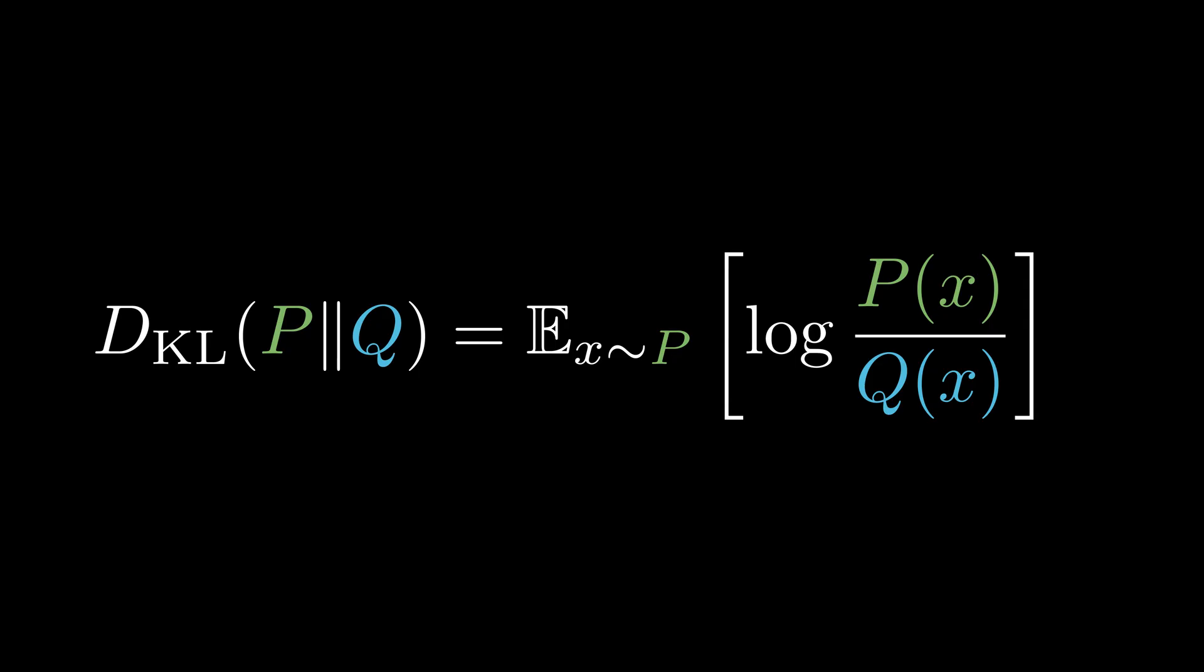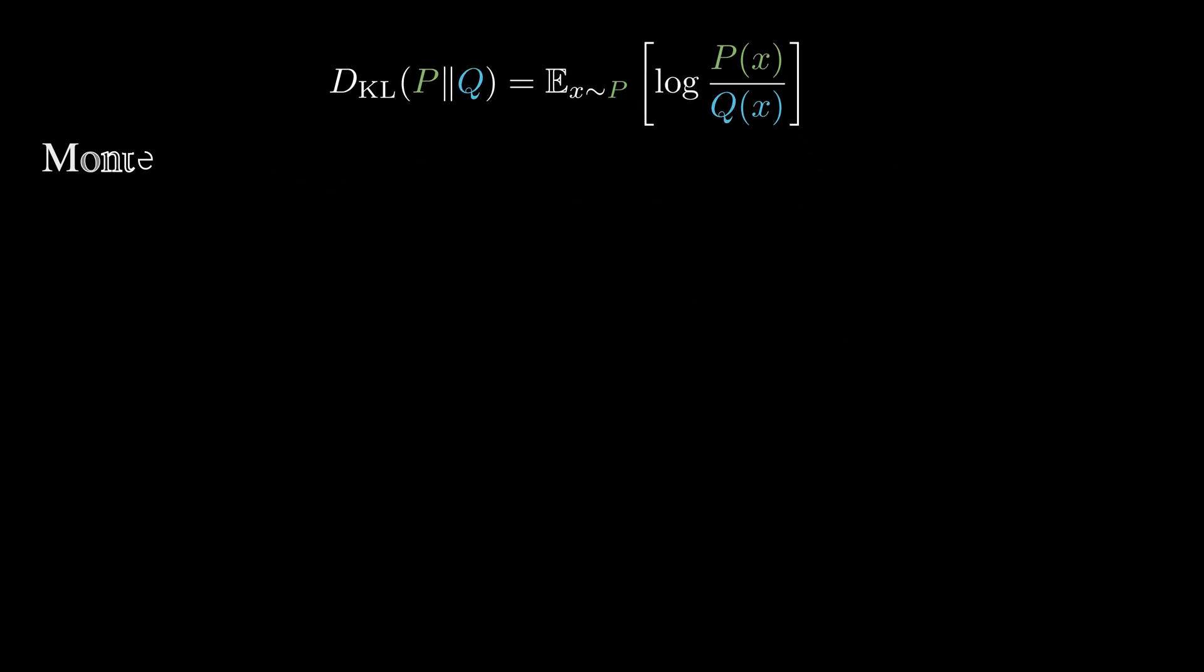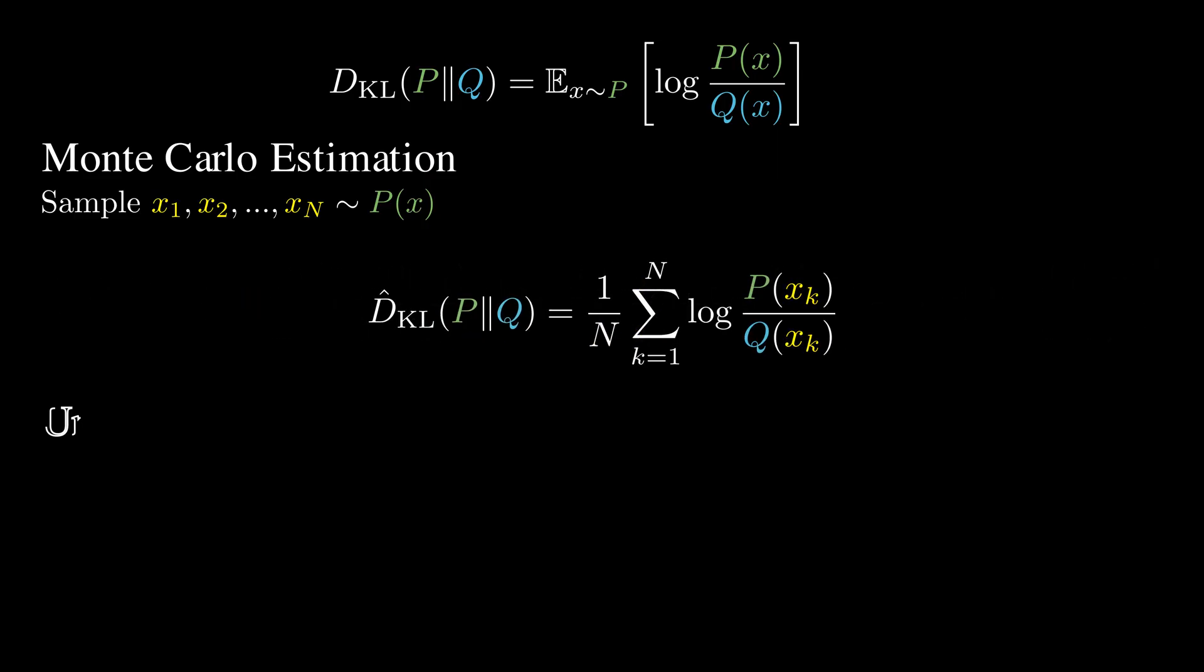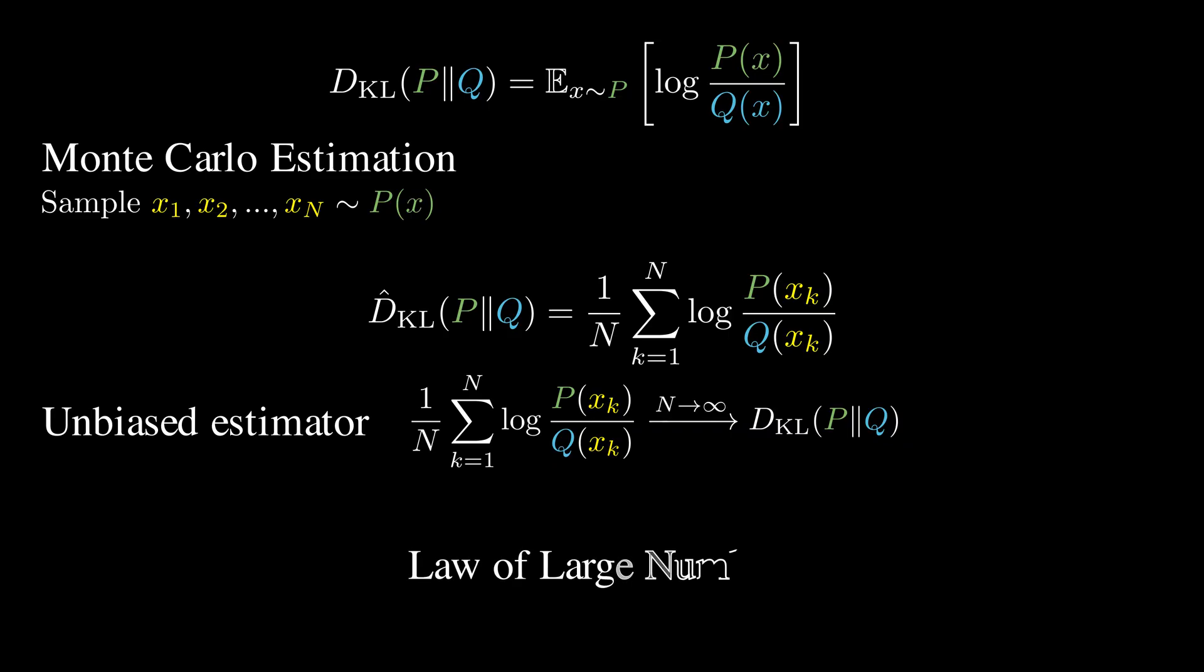Let's start by rewriting KL divergence as an expectation of the log ratio between P and Q. To estimate this expectation, we can use a simple but powerful technique called Monte Carlo estimation. Instead of computing the expectation directly, we draw samples from the probability distribution, P(x). For each sample xi, we compute the values of log P(xi) and log Q(xi). We then add them up together and divide the sum by the number of samples. This gives us a Monte Carlo approximation of the KL divergence. Let's write this more concisely. This estimator is unbiased, meaning that as the number of samples increases, the approximation converges to the true KL values. This follows from the law of large numbers.